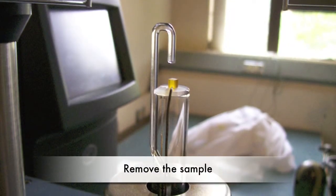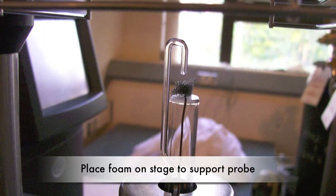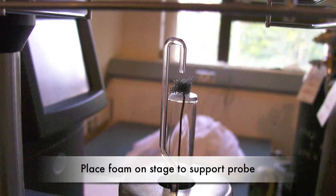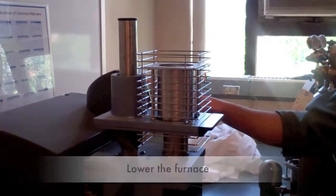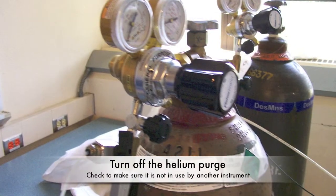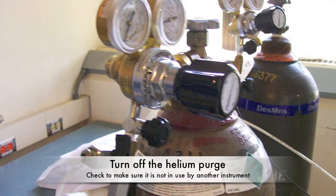After the TMA is cooled, remove the samples. Place a small piece of foam on the stage to protect the probe. Then lower the furnace. Turn off the main valve of the helium tank if it is not in use by another instrument.